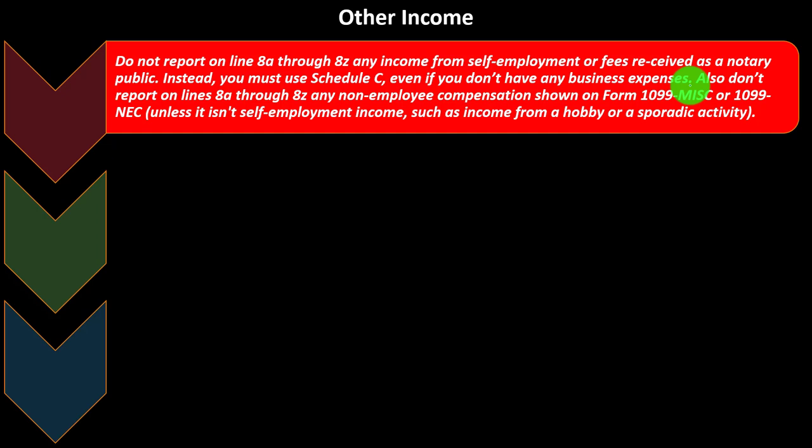Also, don't report on lines 8A through 8C any non-employee compensation shown on Form 1099-MISC or 1099-NEC, unless it isn't self-employment income — such as income from a hobby or a sporadic activity. A 1099-NEC typically indicates to the IRS that the person has a business, requiring reporting on Schedule C and making them subject to self-employment tax.